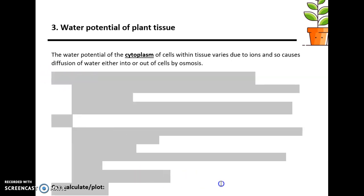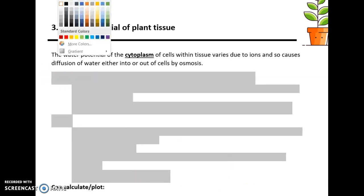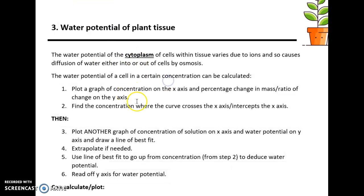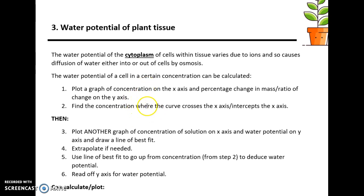The practical requires you to determine the water potential of a cell at a certain concentration. To do this, you first plot a graph with concentration on the x-axis and percentage change in mass — or the ratio of change — on the y-axis. Then from that graph, you find the concentration where the curve crosses, or intercepts, the x-axis.